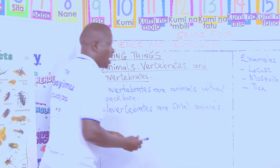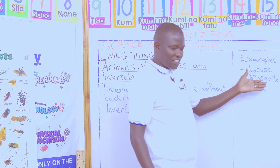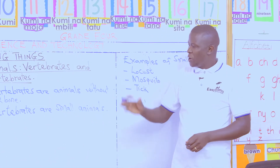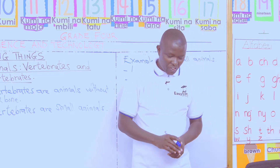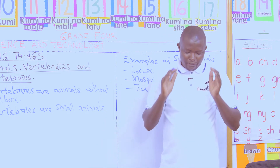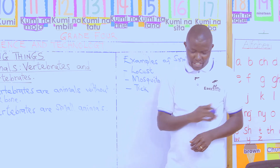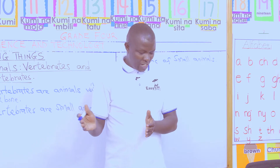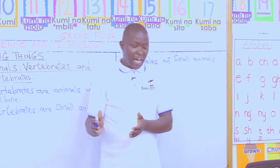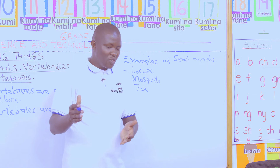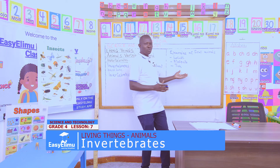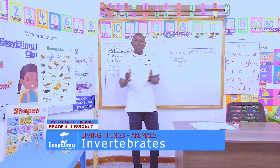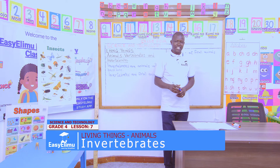Examples of these small animals without backbone — which we call invertebrates — have already been given. Now, in your groups, can you discuss more examples of animals without backbone apart from the ones we have on the board? Discuss and give me the answers.